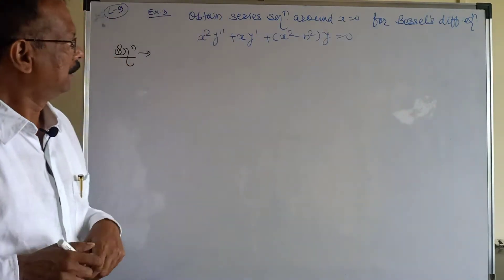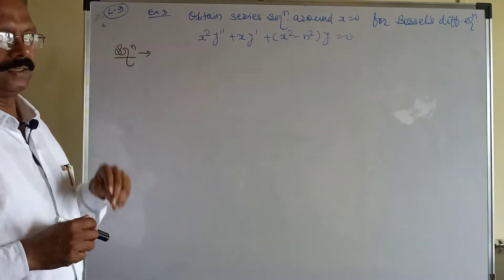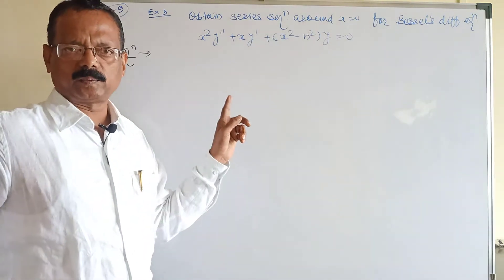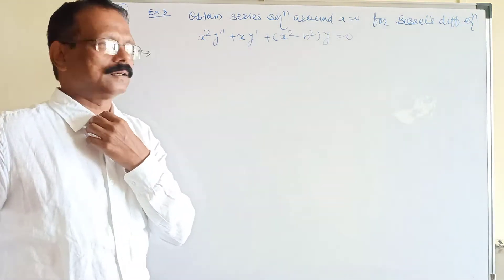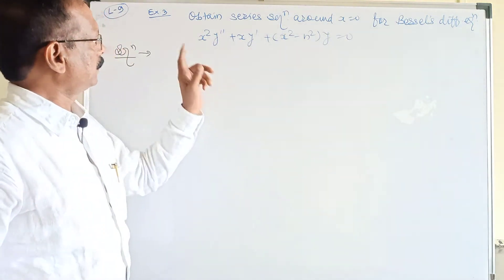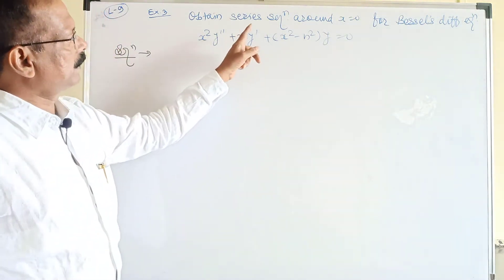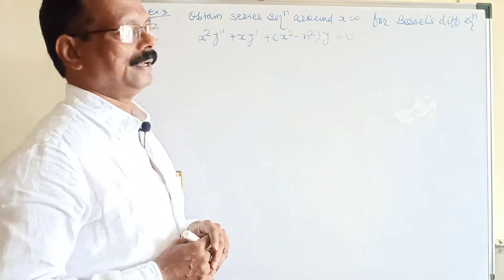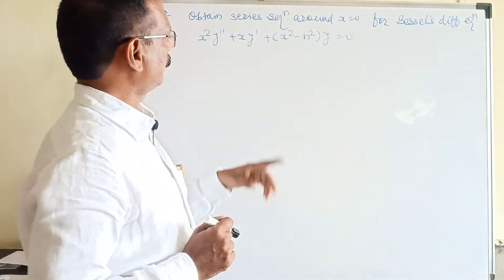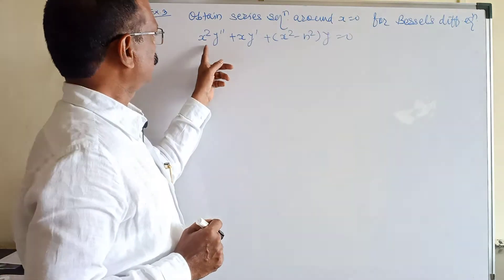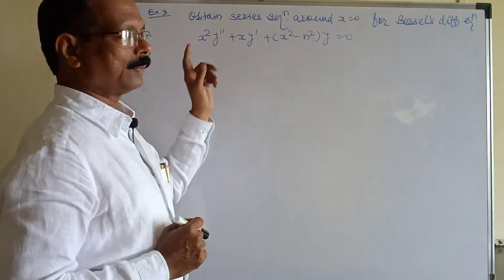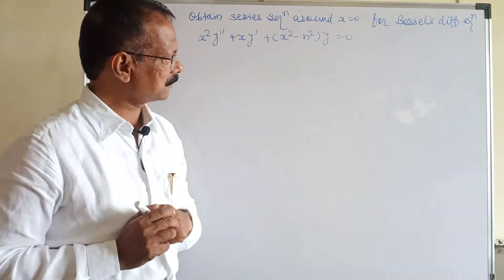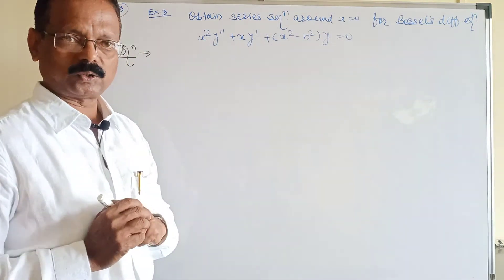Good morning everybody. This is my lecture. We have to solve the last example from the partial differential equation. The example is: obtain the series solution around x = 0 for Bessel's differential equation x² y'' + x y' + (x² − n²) y = 0.